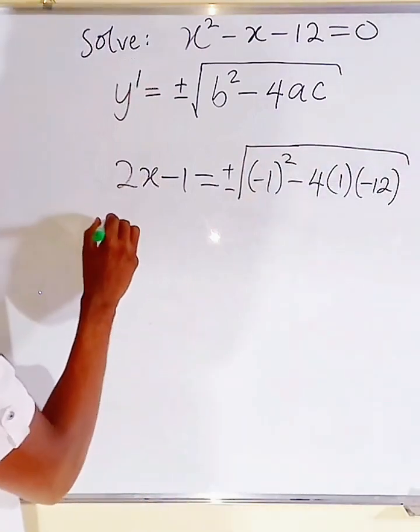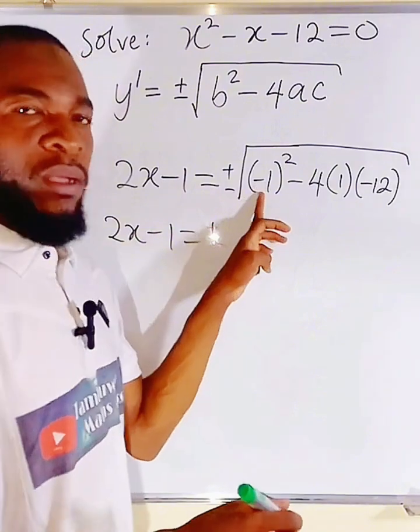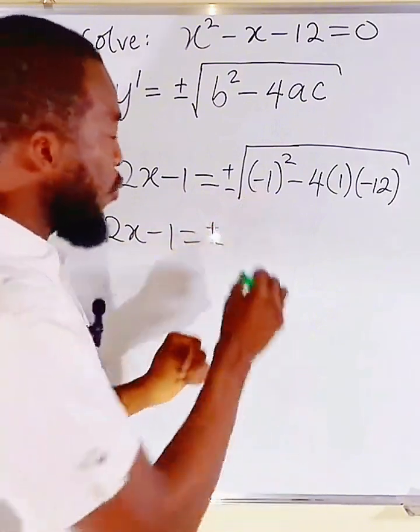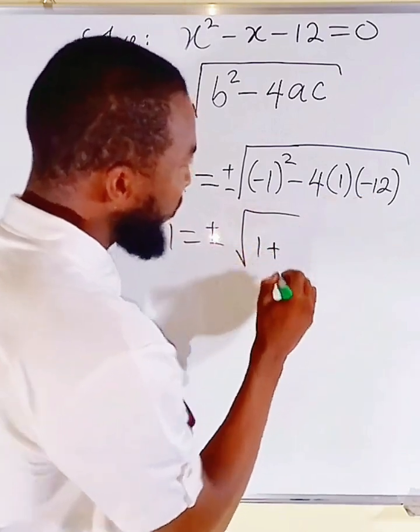Let's simplify this. This is 2x minus 1 equal to plus or minus. Negative 1 squared is 1. We have 1. Minus minus, we have plus.